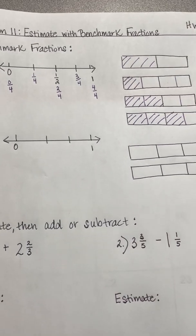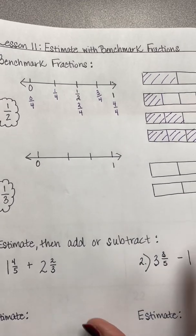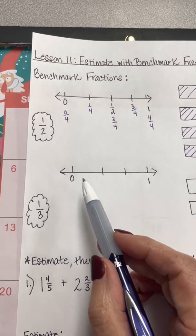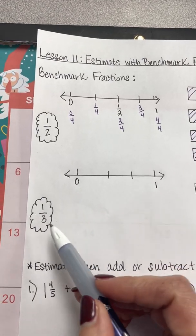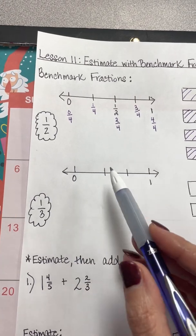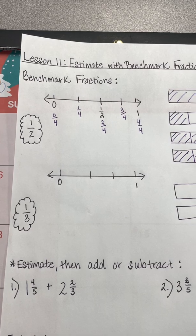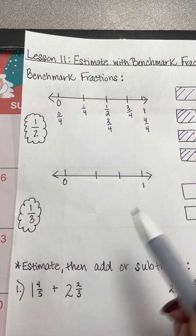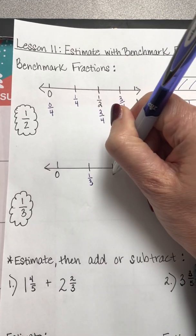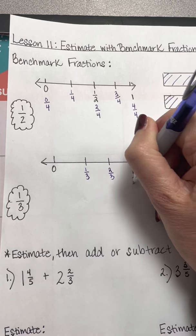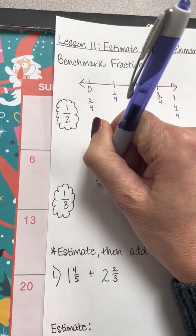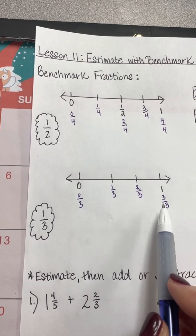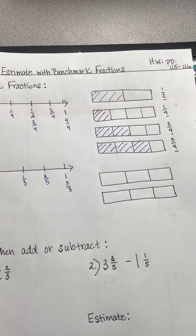One-third isn't used as much as a benchmark as one-half and the fourths, but I wanted to show you it to give you an idea of how one-half and one-third compare. On the number line between zero and one, I split into three equal pieces. The first equal piece is one-third, the next is two-thirds. One whole is three-thirds, and zero is zero-thirds.